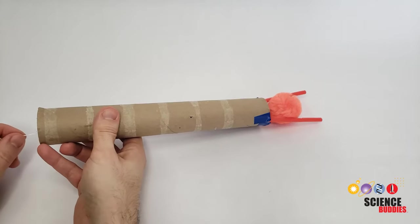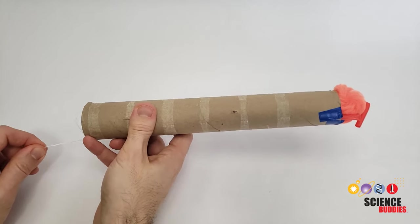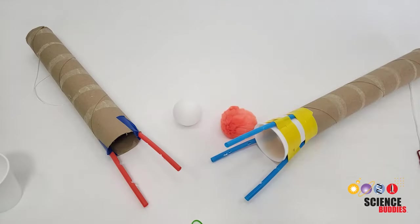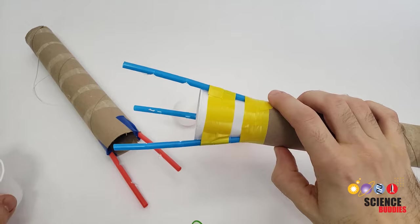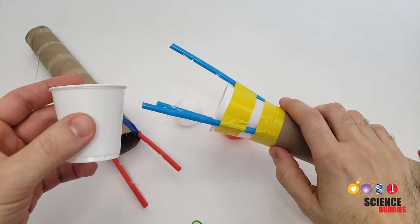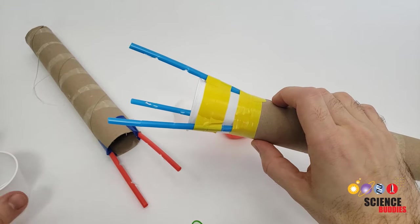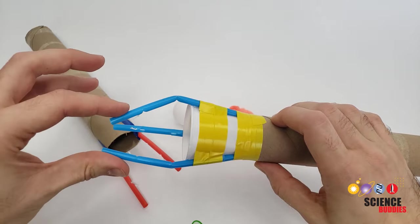And here, I have my completed gripper with two straws taped to the end of the tube. There are still many different design decisions you can make. For example, in the design I showed at the beginning of the video, I taped the straws to a small plastic cup instead of directly to the tube. This spreads the fingers out at more of an angle.